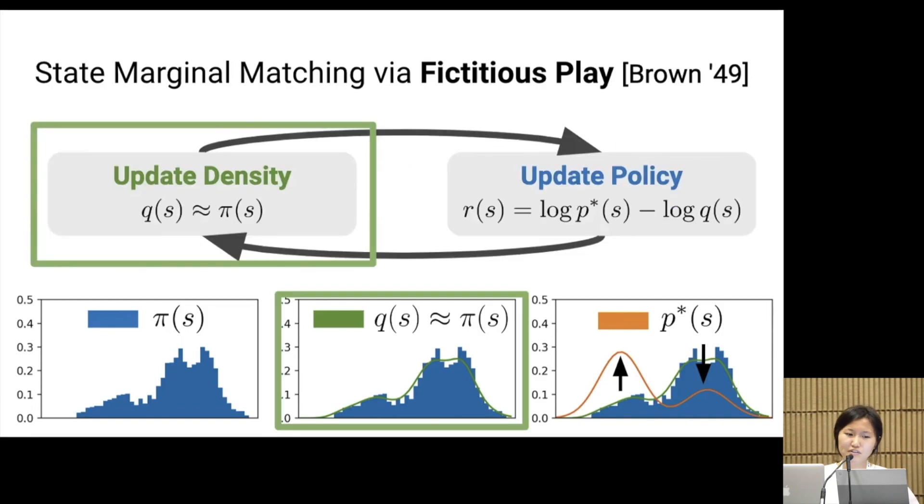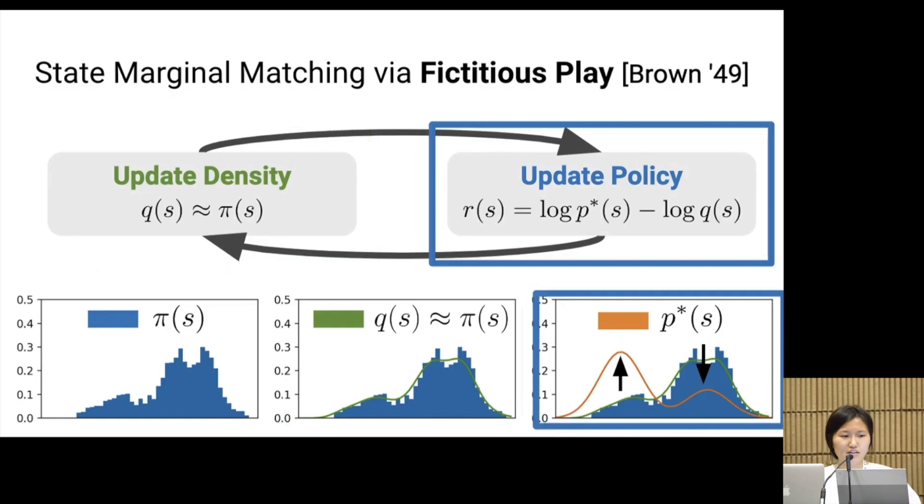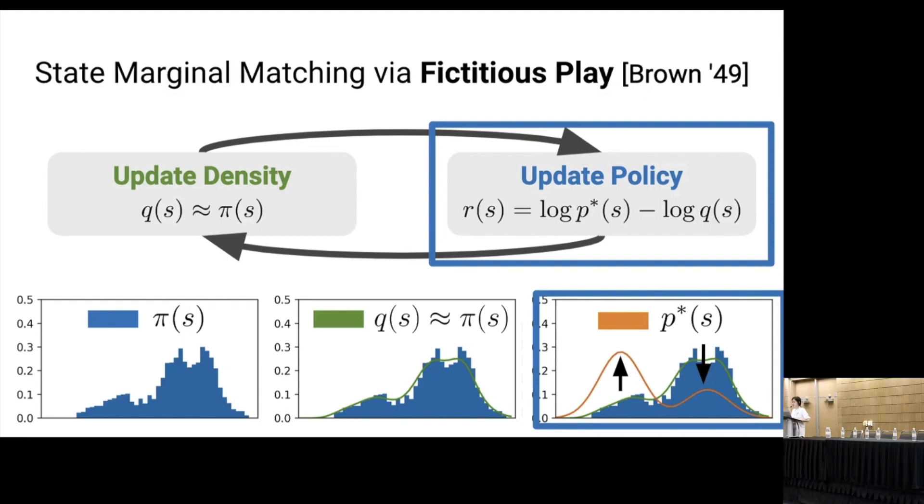So our algorithm alternates between these two steps. First, updating the density with the states visited by the policy, and updating the policy with the reward defined by the density.